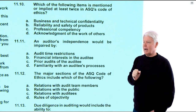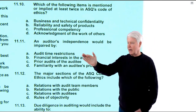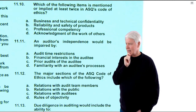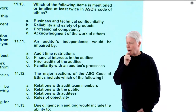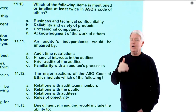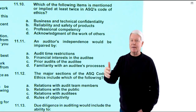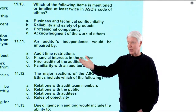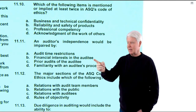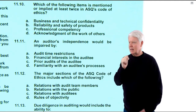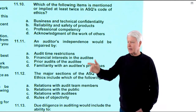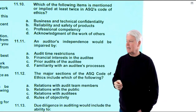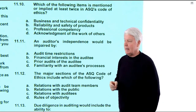Question 11.11: An auditor's independence would be impaired by — audit time restrictions; financial interests of the auditee; prior audits of the auditee (if you audit someone too much you start becoming friends and can lose independence); familiarity with an auditee's processes — no, that's actually a good thing. B — financial interests of the auditee — is no doubt the obvious answer. 11.11 is B, and that is correct.